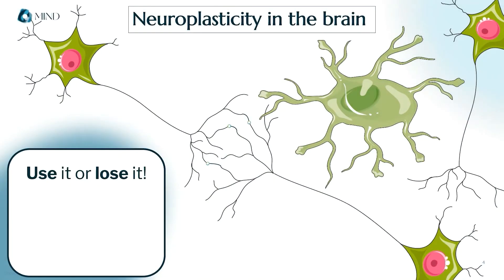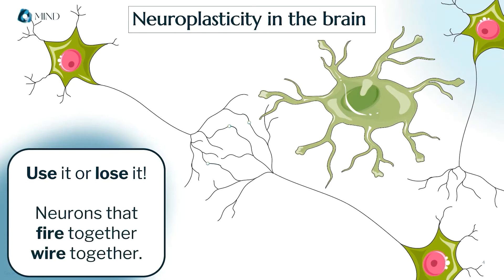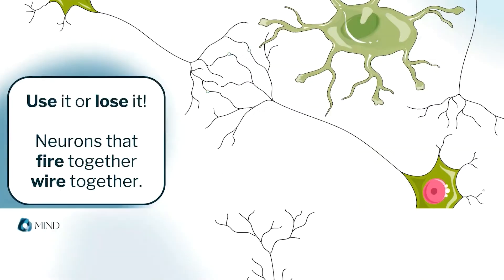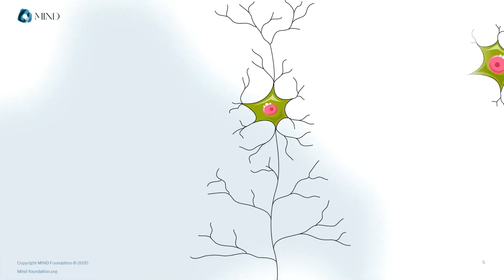By the same token, neurons that fire together, wire together. Connections you use more often get stronger. When you learn or experience something new, you're forging new neural pathways. And the more you reinforce this learning, the stronger they get.